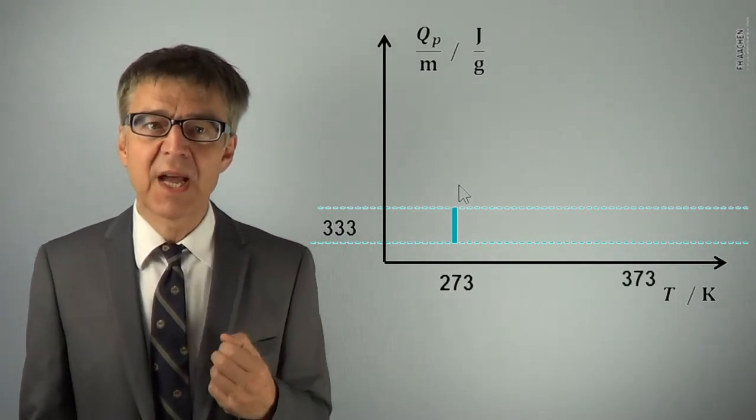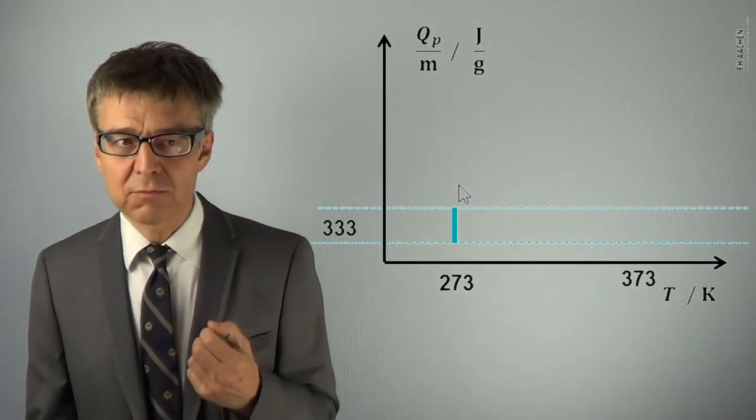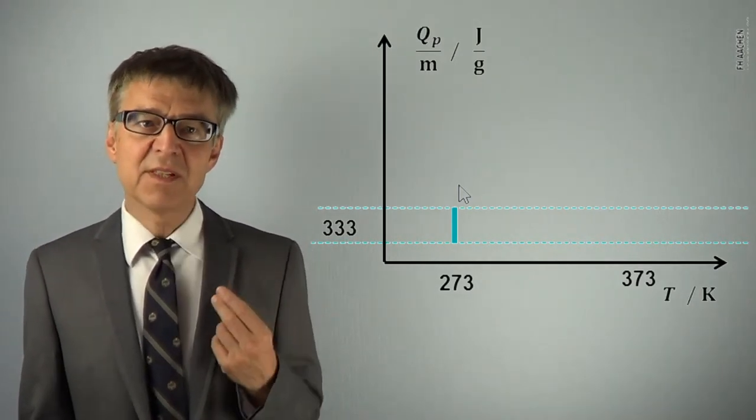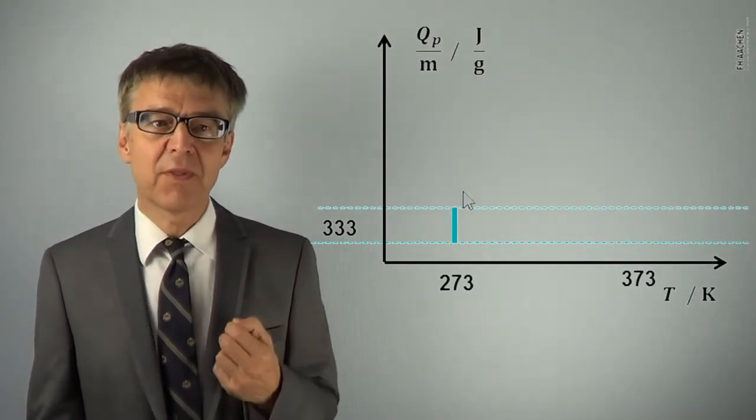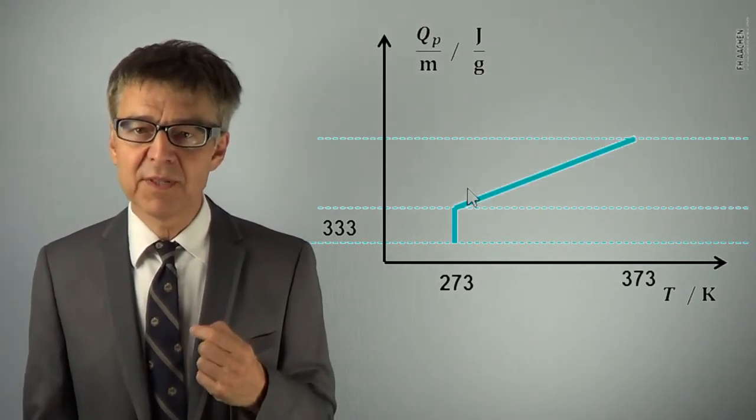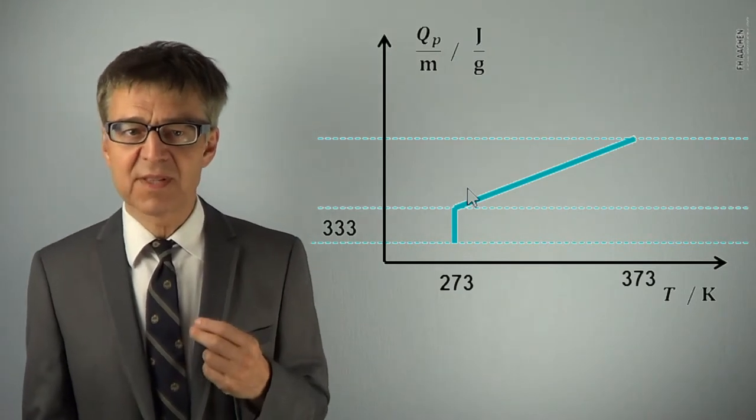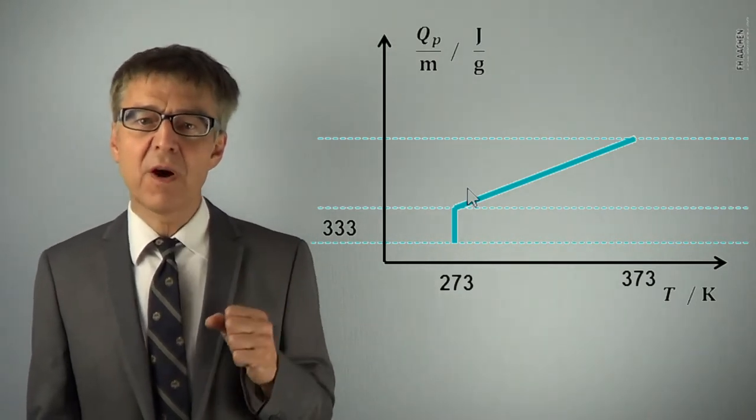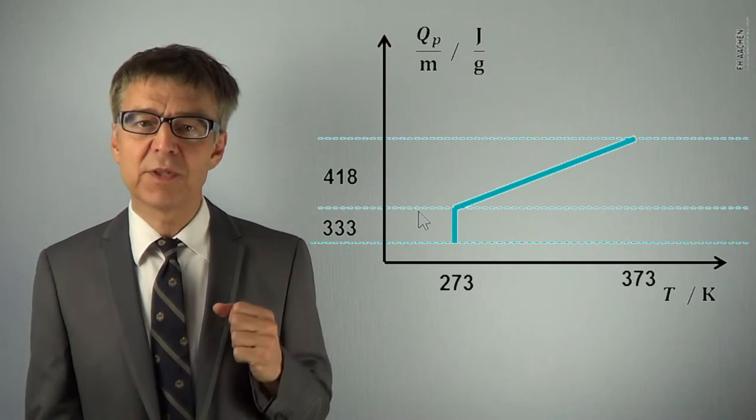If we continue to add heat, the temperature of our system increases. The increase in temperature correlates very well with the amount of heat absorbed. To reach 373K, we need a further 418J of heat.